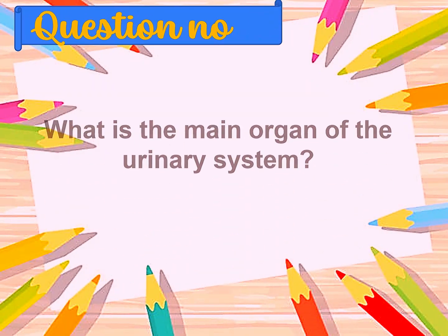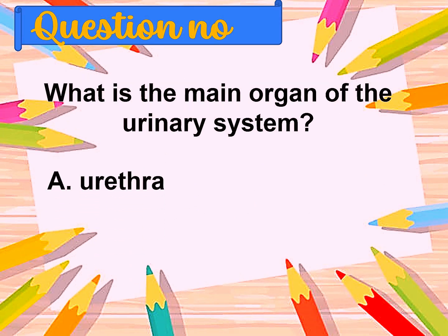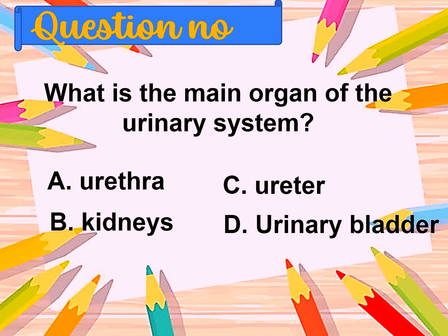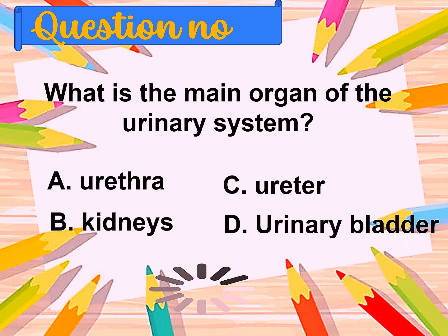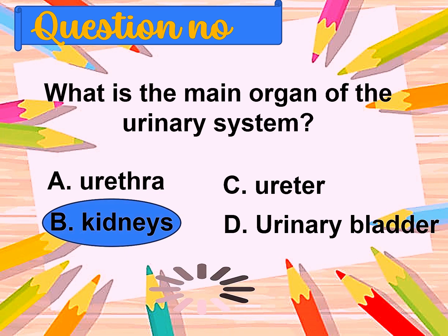Question number five: What is the main organ of the urinary system? A. Urethra, B. Kidneys, C. Ureter, D. Urinary bladder. The correct answer is kidneys.